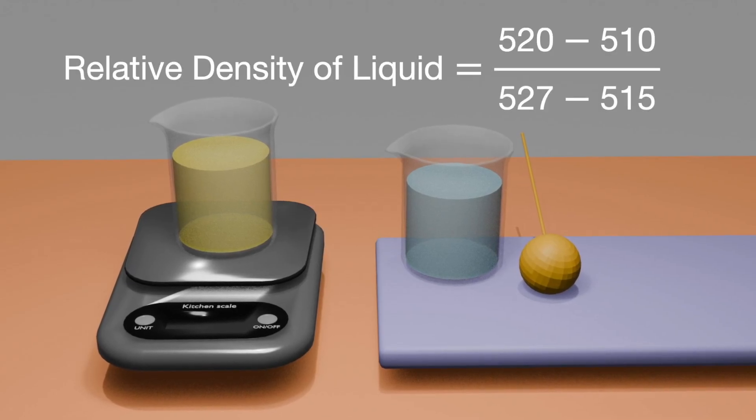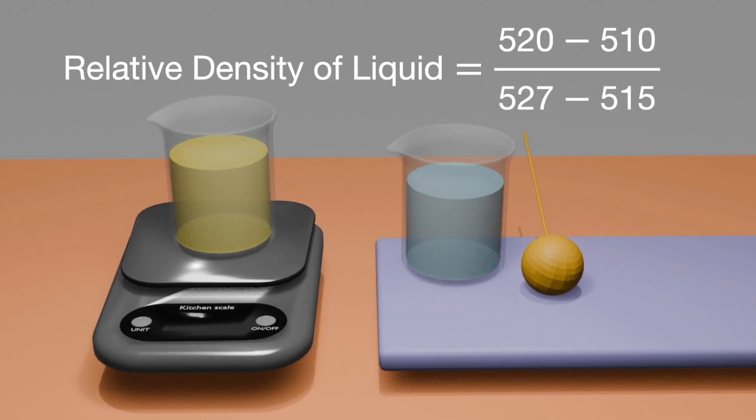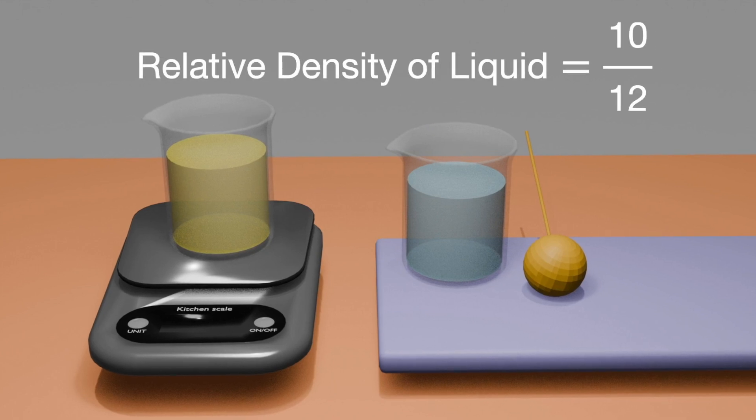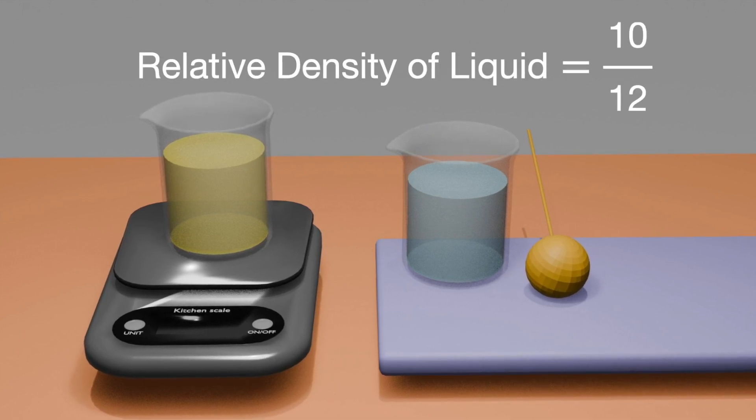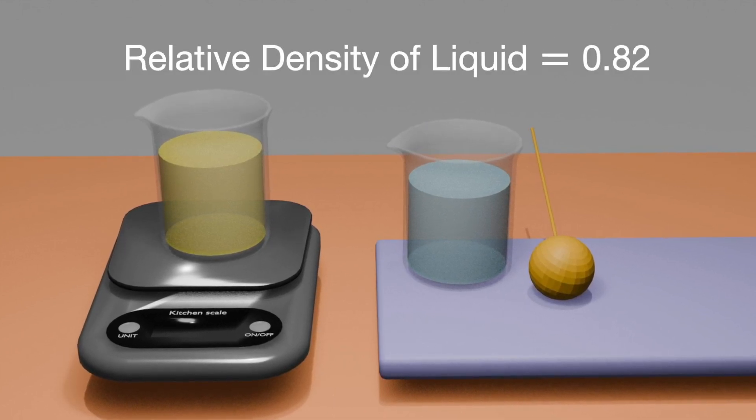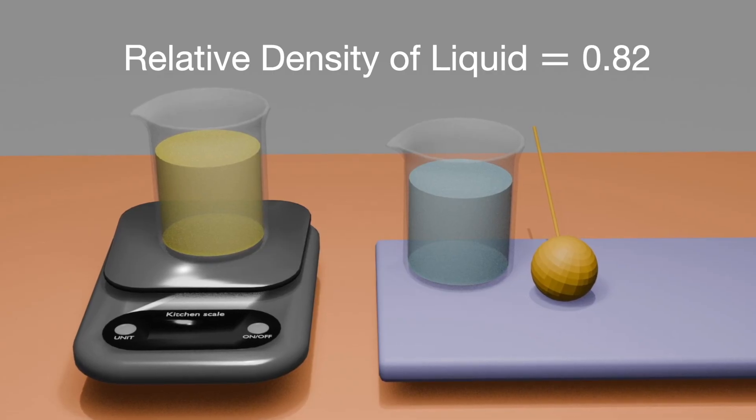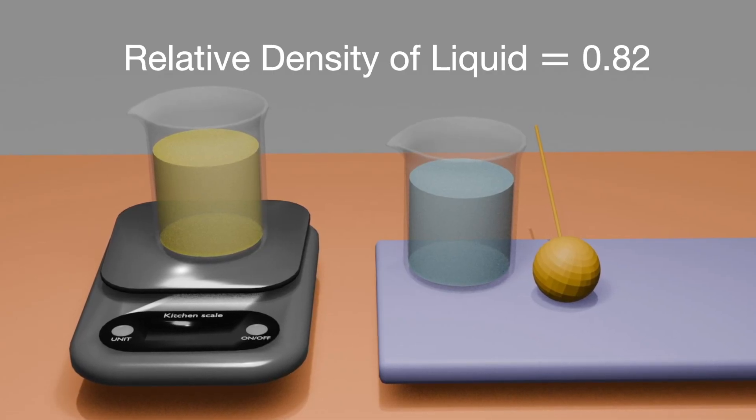Relative density is equal to 520 minus 510 divided by 527 minus 515. That would be equal to 10 divided by 12. Relative density of liquid is equal to 0.82.